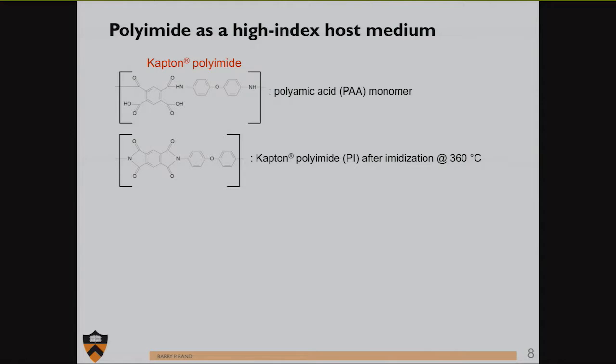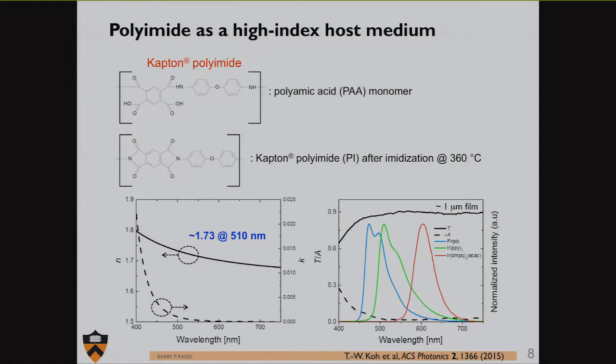We're going to take a high index medium and impregnate it with a bunch of air bubbles. What we're going to use as our high index medium is Kapton, a polyimide material. You start with polyamic acid as a precursor. You then imidize it to get this ring closing of the nitrogen moiety and make polyimide. That imidization happens at quite high temperatures, which makes polyimide thermally stable. It has a high index, about 1.7.